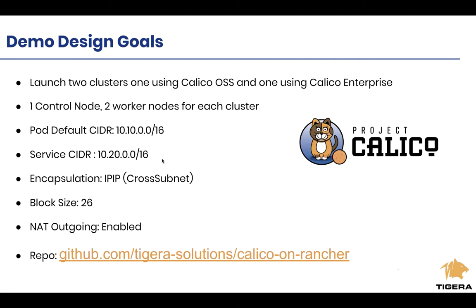The demo design is: launch an RKE cluster, two nodes, with a pod CIDR of 10.10.0.0/16 and service CIDR of 10.20.0.0/16. That gives us enough IPs and VIPs for a large number of pods and services. For encapsulation, let's use IP-in-IP cross-subnet — a setting that allows you to do encapsulation only when nodes are across different subnets. For example on AWS, if worker nodes are on the same layer-two subnet, no encapsulation is needed; if they're in different availability zones, Calico selectively establishes IP-in-IP tunnels. We'll use the default block size of /26 and enable outgoing NAT because we're using encapsulation.